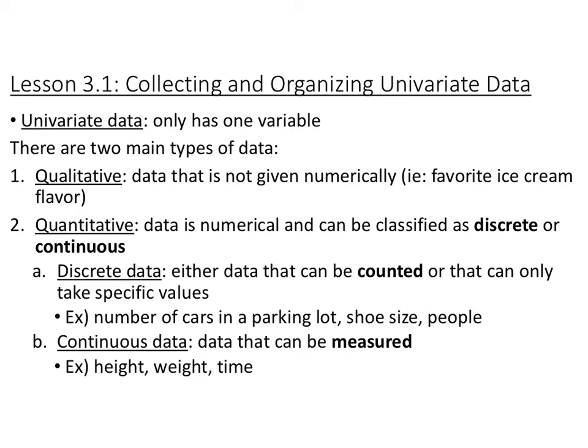Discrete data is stuff that can be counted — it can only take specific values. For example, the number of cars in a parking lot (there can't be half a car), shoe size (only specific sizes exist), people, animals — those are discrete data. Continuous is something that can be measured: height, weight, time — anything where you can have a fractional value and take a range of numbers. That's continuous data. These are the two different types of quantitative data we're going to be looking at.